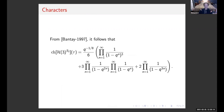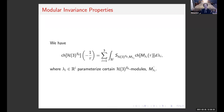We can also get results about characters: via invariant theory and something similar to Molien's theorem from classical invariant theory, we can calculate the character for this S₃ orbifold. It has three parts, and there are nice modular invariant properties of this character. Notice we have integrals involving the character instead of sums.